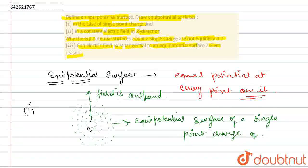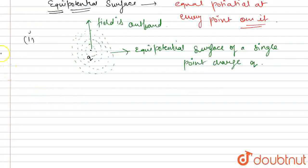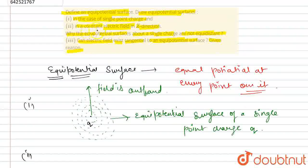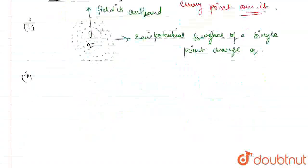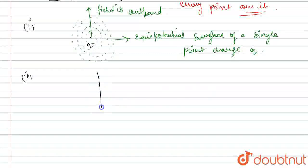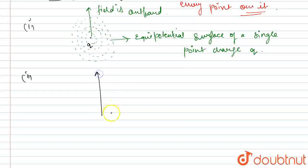Now for the second part, we have to find, what we have to do is, it asks the constant electric field in Z direction. So, this is our Z direction, this is our X direction and this is our Y direction. This is Y, this is X and this is Z direction.